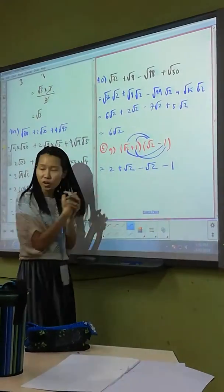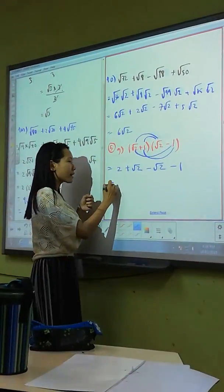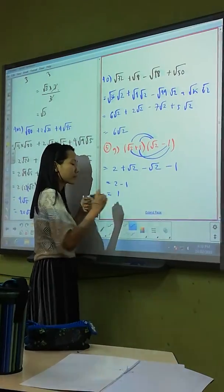It's one. Square of two minus square of two? Zero. So I get two minus one which is one.